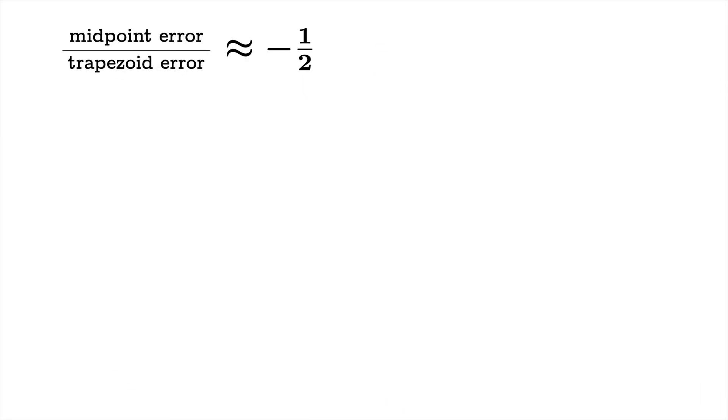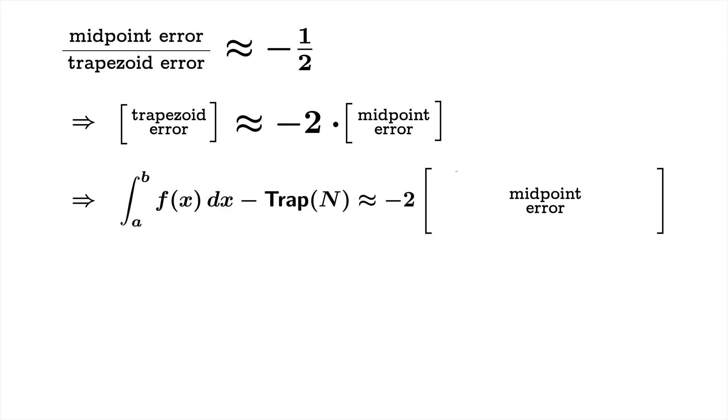So here's what we'll do. We'll start with this approximate equality and we'll solve for the trapezoid error. So we expect roughly the trapezoid error to be about negative two times the midpoint error. Now what is the trapezoid error? It's the difference in the actual area, i.e. the integral of f from a to b, minus the trapezoid sum. And what's the midpoint error? Well it's the actual area minus the midpoint sum.